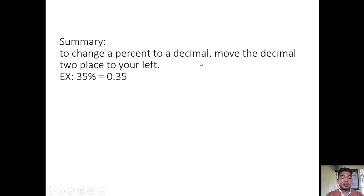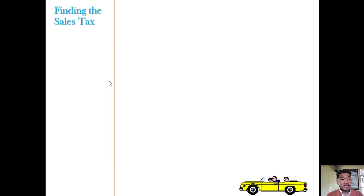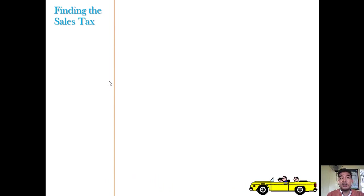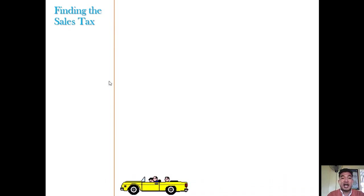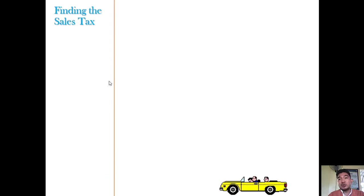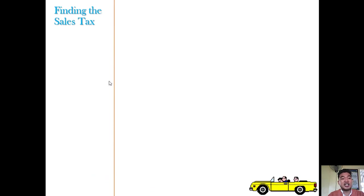Summary: to change a percent to a decimal, move the decimal point two places to the left. So 35% is equal to 0.35. Or you can divide the percent by 100 to get the equivalent decimal. That's basically commission — you simply multiply the percent by the sales to get the commission of a certain agent.